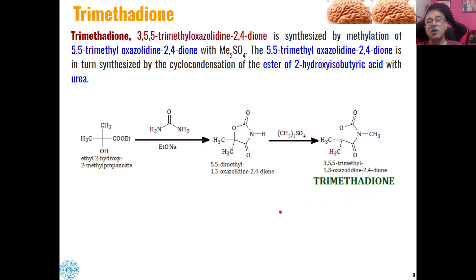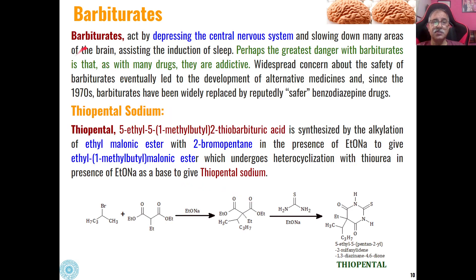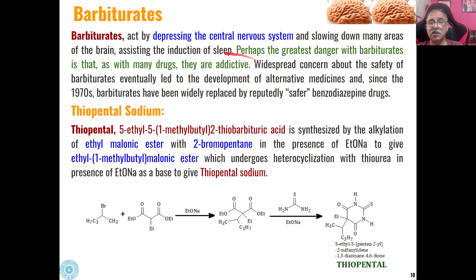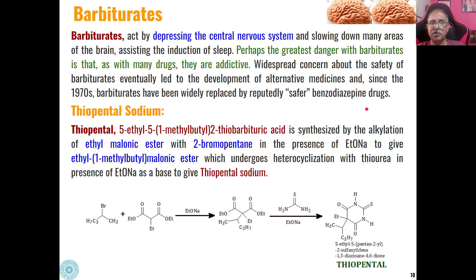So this is how these anti-psychotic drugs can be synthesized. Then are barbiturates — they are anti-depressants that act by depressing the central nervous system. The greatest danger with barbiturates is that they are addictive in nature, which is why they are rarely used now. They have been replaced by safer benzodiazepine drugs such as Diazepam and Oxazepam. The common barbiturate is Thiopental sodium.